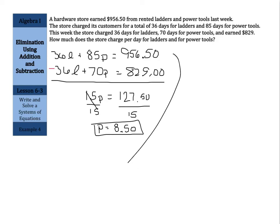Now, what about our ladders? Well, pick either equation. I'm going to pick that second one. Again, smaller numbers sometimes are a little bit easier to work with. We have 36L plus 70P equals $829. Although, either equation you're dealing with some big numbers here. We have 36L plus 70 times that $8.50. We're putting that in for the power tools. And that's going to equal $829. And as we continue simplifying here, we have 36L plus the 70 times $8.50 is $595 equals 829.